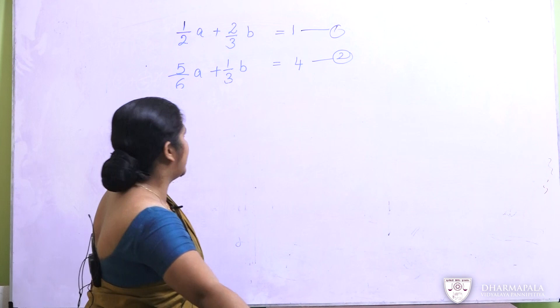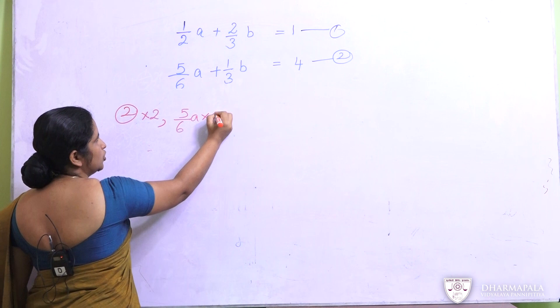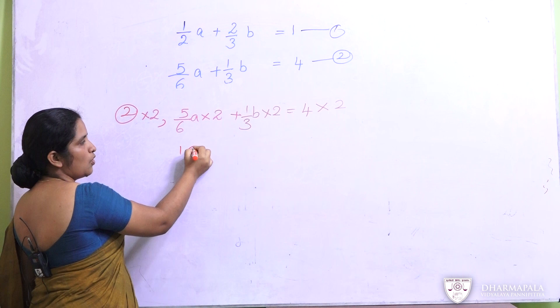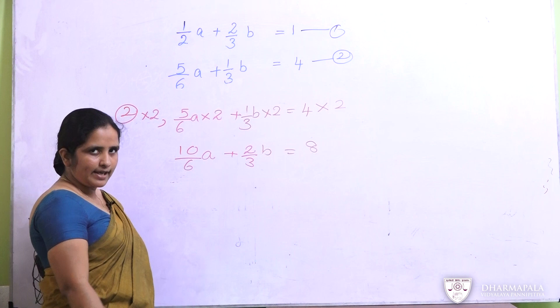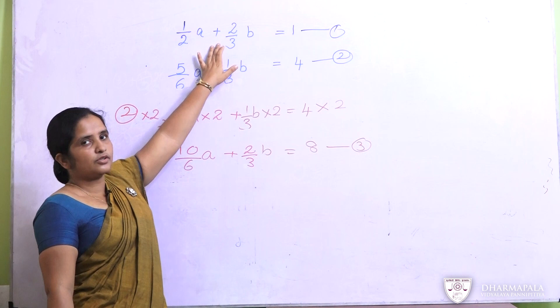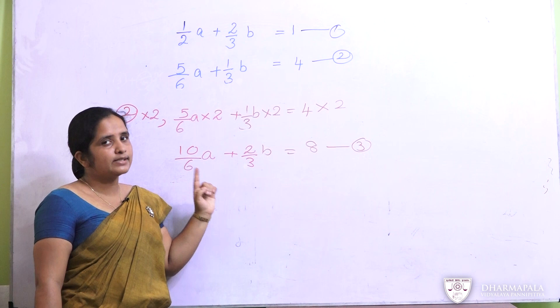Multiplying the second equation by 2 gives: five sixths a times 2, plus one third b times 2, equals 4 times 2. When you simplify this you get ten sixths a plus two thirds b equals 8. We will name that equation 3. Now you can see that equation 1 also has coefficient two thirds for b, and equation 3 also has coefficient two thirds for b. So we can remove these two terms. Since the coefficients are the same with the same sign, we have to subtract the two equations.